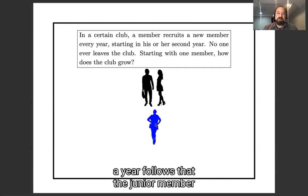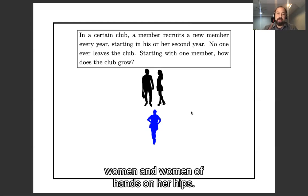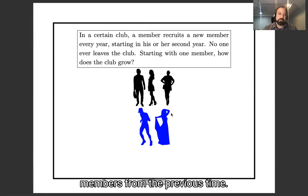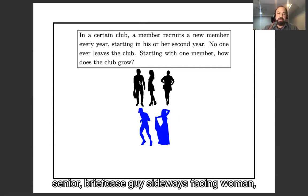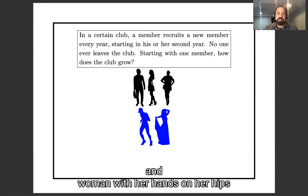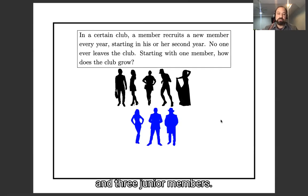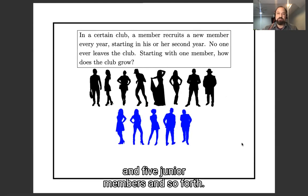So the next year, we have two senior members and one junior member. The year that follows, the junior member becomes senior, so there'll be three people up here and two people down here, recruited by the two senior members from the previous time. And it keeps going like that. Now we have five senior members and three junior members. And for the next round, we have eight senior members and five junior members, and so forth.